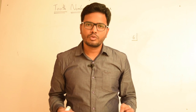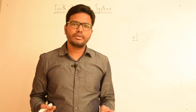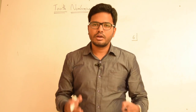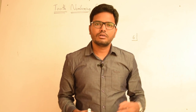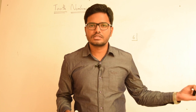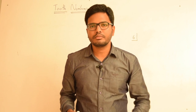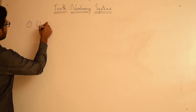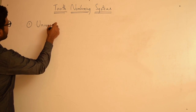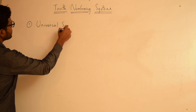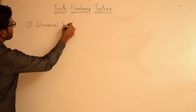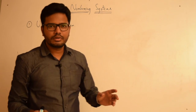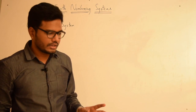We'll now see various numbering systems ranging from Universal, Sigmondi Palmer, to the two-digit FDI system, and also another system advocated by Victor Haderup. The first system we'll discuss is the Universal Tooth Numbering System. The main advantage of the Universal Tooth Numbering System is that each tooth — whether primary dentition or permanent dentition — has a unique number.